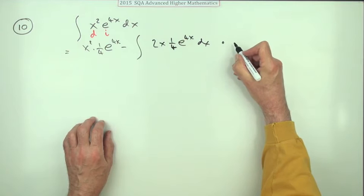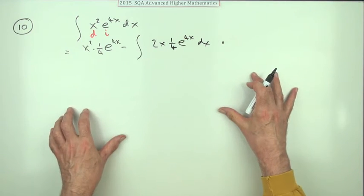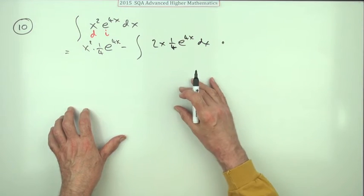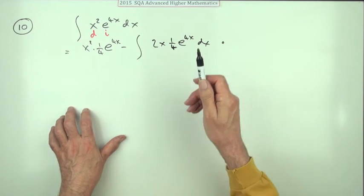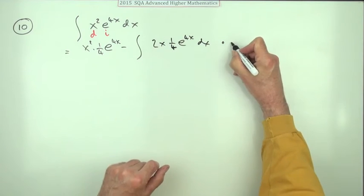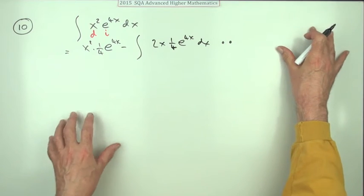There's also a second mark which says an appropriate choice for u and v dashed and correct application. Well I've not stated any u or v dashed but that would mean deciding which one you differentiate and which one you integrate and applying it properly. So I claim the second mark here, it's just I don't see the need for doing that at the side.